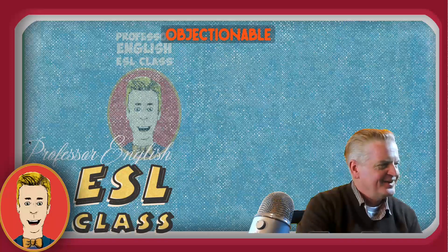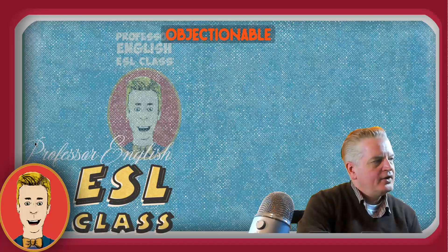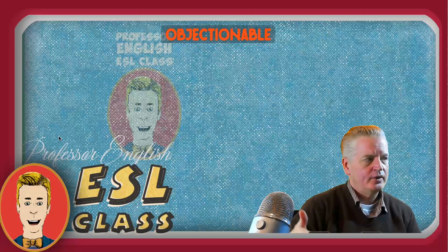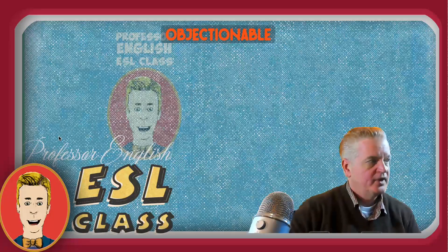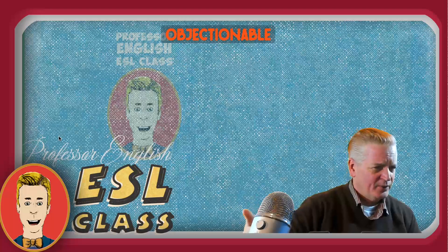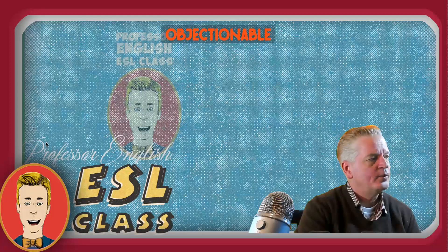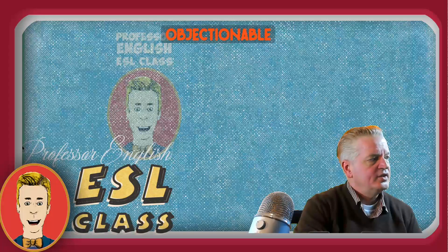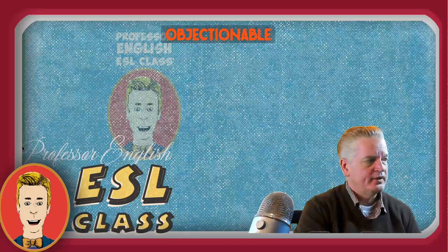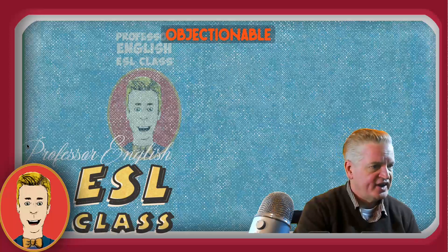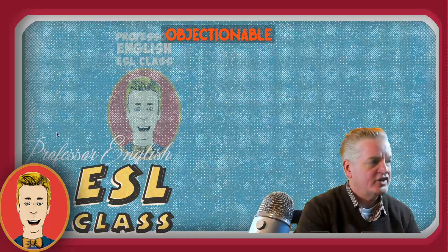Lucy didn't like the movie because it was too violent. So we can say she found the movie objectionable — she didn't like it, she objected to it. Let's change a word: she found the conversation objectionable.